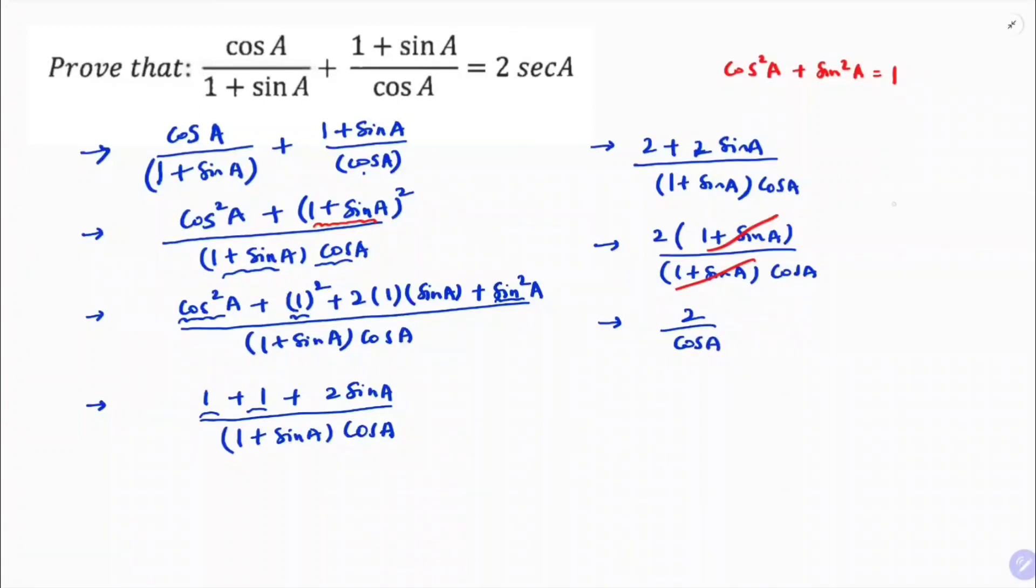So here, cos A is adjacent by hypotenuse, and sec A is hypotenuse by adjacent. So here, 2 by cos A, I can write as sec A. Cos A and sec A are reciprocal. So the answer is 2 sec A.